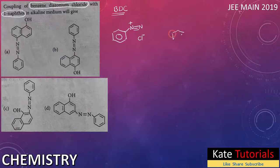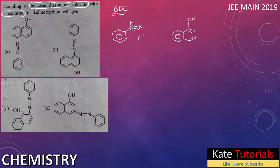What is the structure of naphthol? This is a benzene ring with one more benzene ring fused to it. If OH is attached here, it is 1-naphthol. If the same OH is attached to this carbon, it will be 2-naphthol. They have told us 1-naphthol, so this is our 1-naphthol.